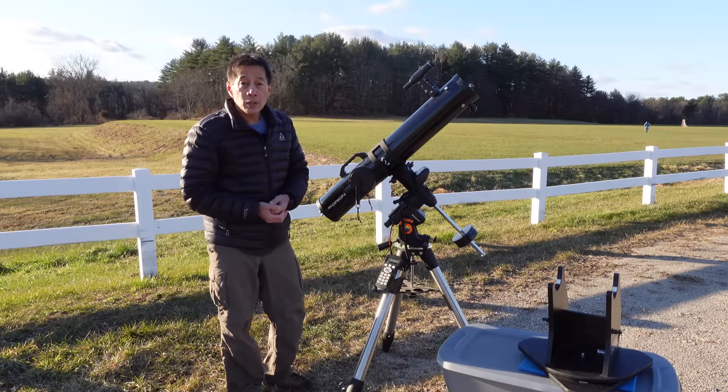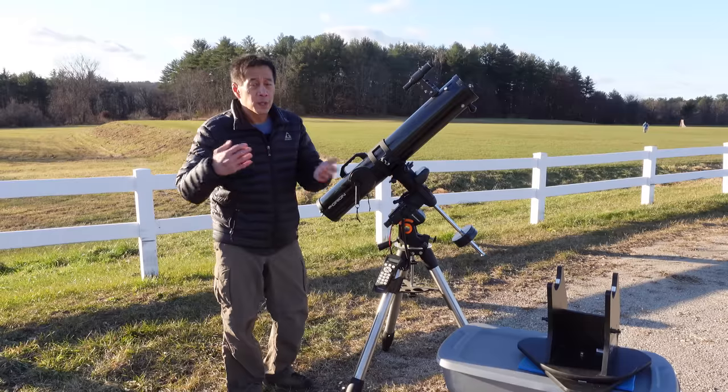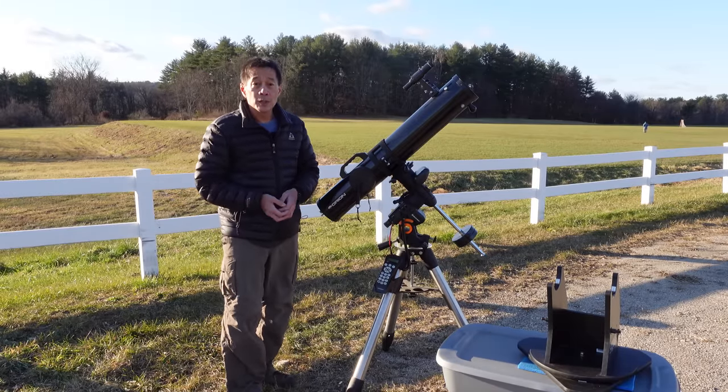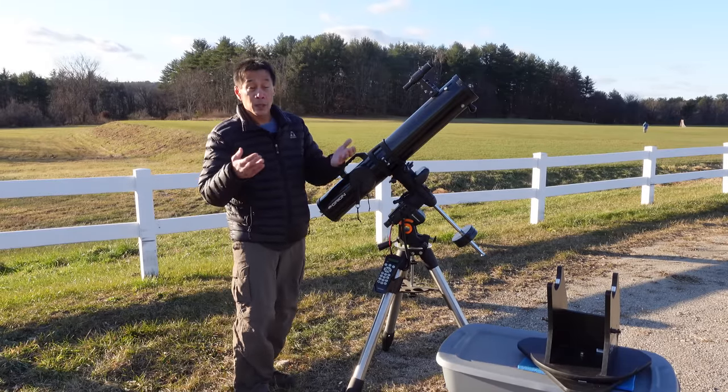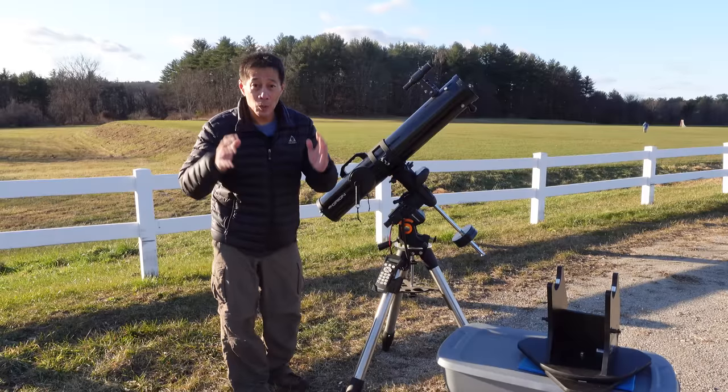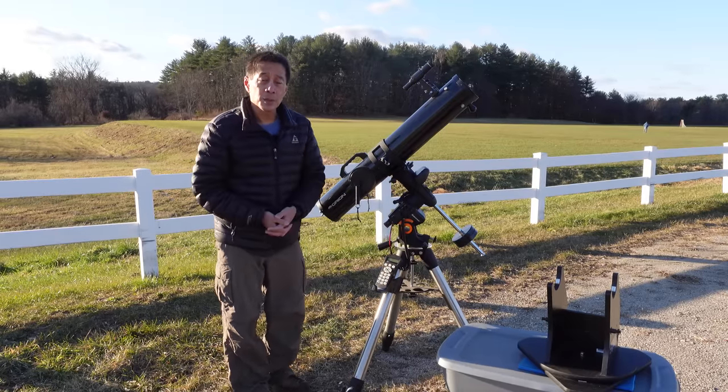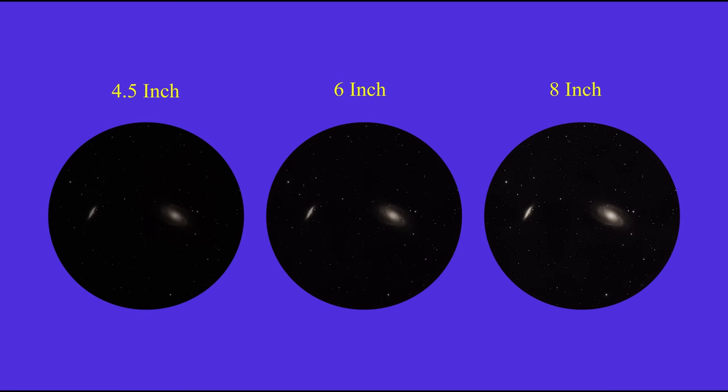So some people ask me, what is the difference between light gathering between a 4 1⁄2 inch, a 6 inch, and an 8 inch? And I'm very often reluctant to do this comparison because your mileage not only may vary, it will vary. It depends on your seeing conditions, your skill level, and any number of factors. But maybe this will be useful to you. I had a 4 1⁄2, a 6, and an 8 inch out here on everybody's favorite pair of galaxies, M81 and M82. And I sort of did this by feel. This is what I came up with and perhaps this will be useful to you.